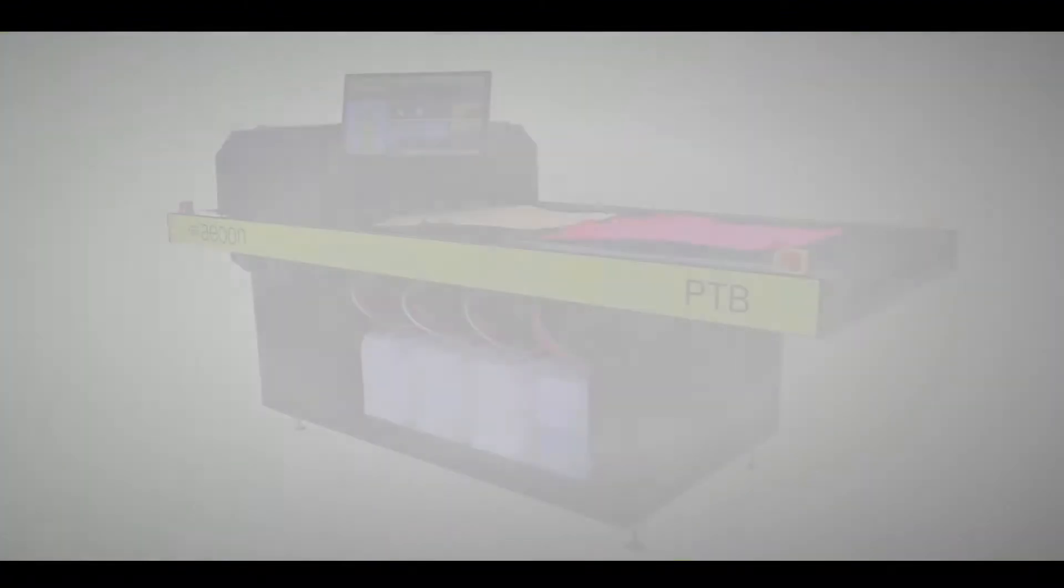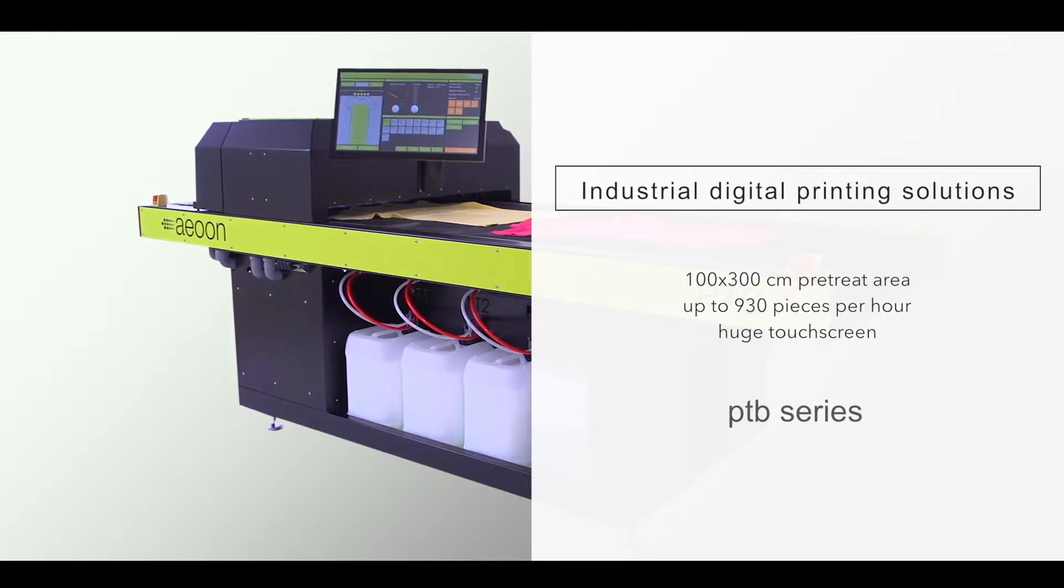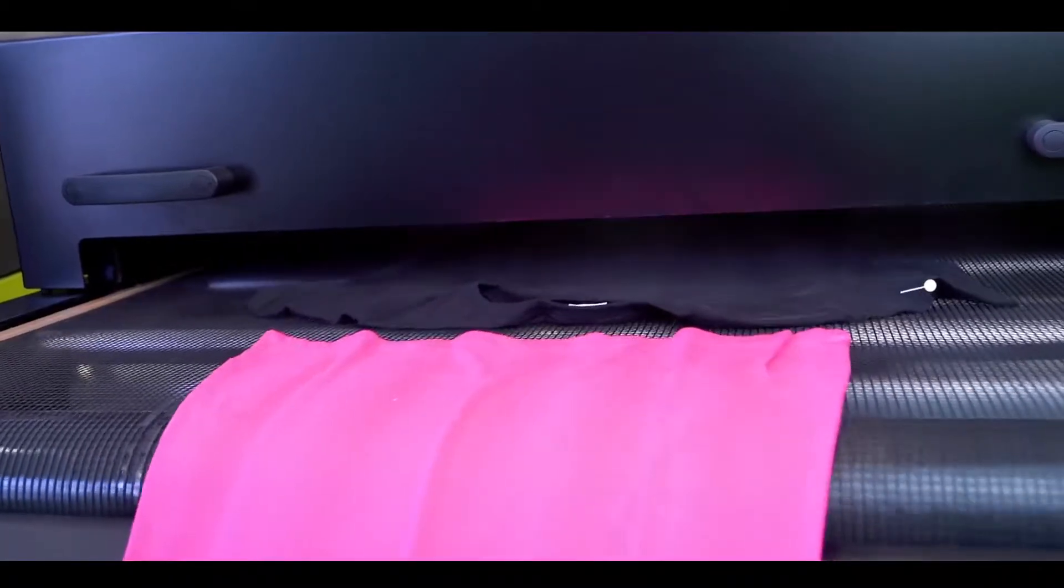Aon Industrial Digital Printing Solutions. The correct pre-treatment of textiles is an essential part of every digital direct-to-garment printing process.